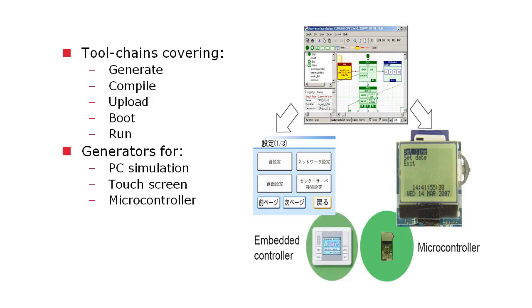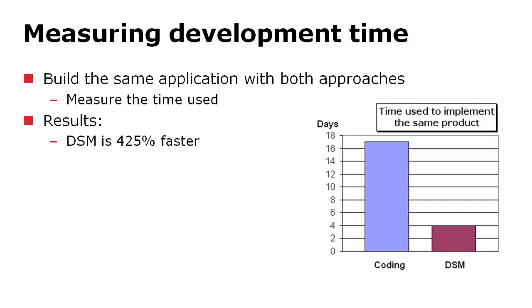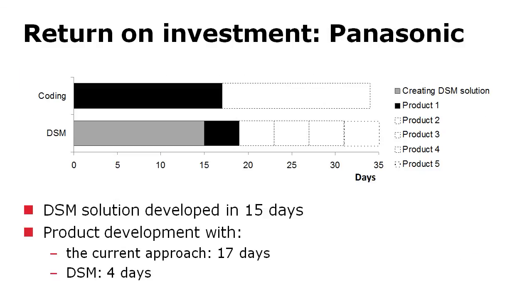They put this in a trial and measured time, building the same application two ways. They found that domain-specific modeling took only four days, whereas it had previously taken 17 days. They also studied implementing the same product on a new platform — using three days to build the generator, they could target a microcontroller. The productivity increase was 400 to 500%, and the return on investment calculation clearly shows that payback is reached with the second product.